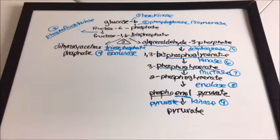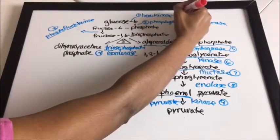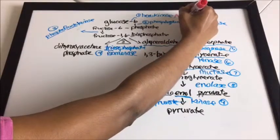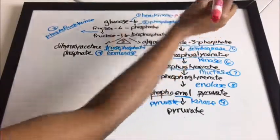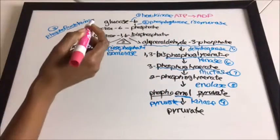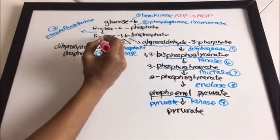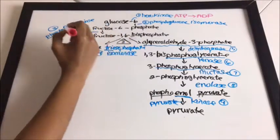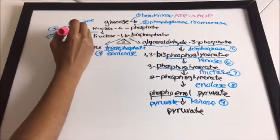Now here are the reactions that happen between the enzymes and substrates. Between glucose and glucose-6-phosphate we have ATP converting to ADP. Next, between fructose-6-phosphate and fructose-1,6-bisphosphate, we again have ATP converting to ADP.